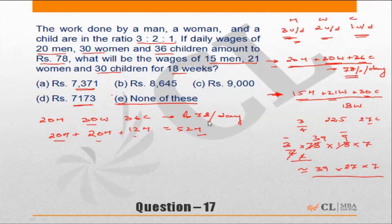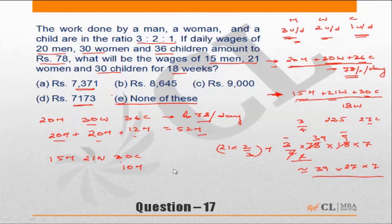Effectively, 52 men have a salary of 78 rupees per day. In the second case, we have 15 men, 21 women, and 30 children. Converting: 30 children amount to 10 men (one-third), and 21 women amount to 21 into 2/3 equals 14 men. Adding: 15 plus 14 plus 10 equals 39 men.